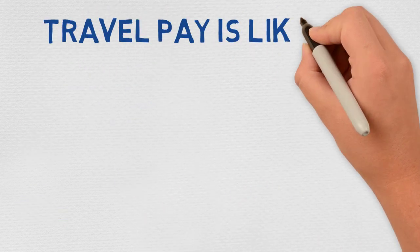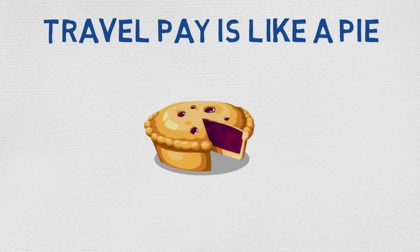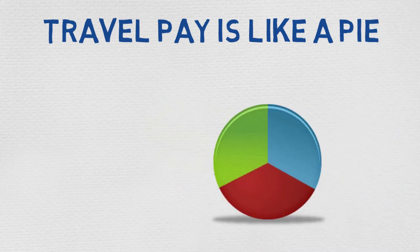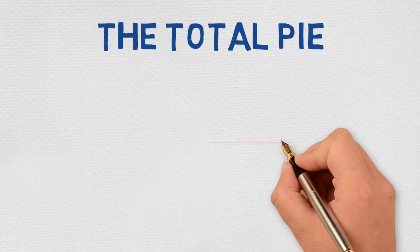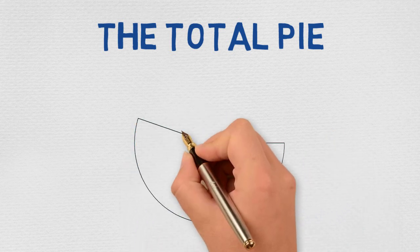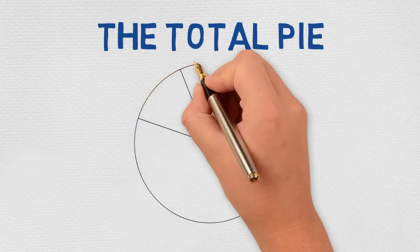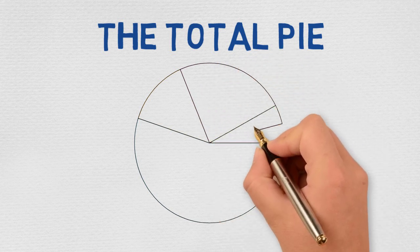It's better to view these variables as services that agencies can provide for a price. When we accept that, then it becomes clear that the travel healthcare compensation package is like a pie. Not that kind of pie, this kind of pie, a pie chart. You see, each benefit or compensation variable should be viewed as just one slice of the pie.